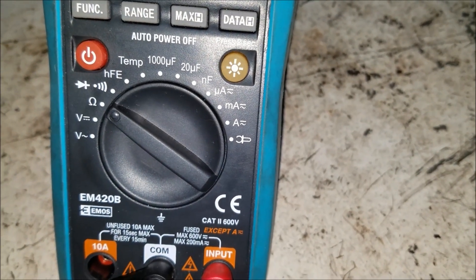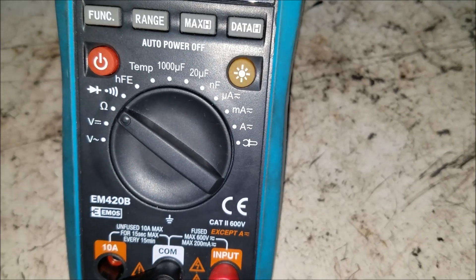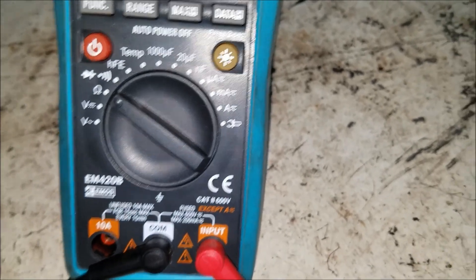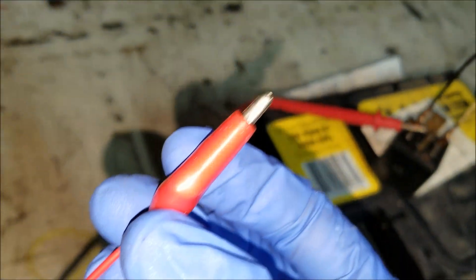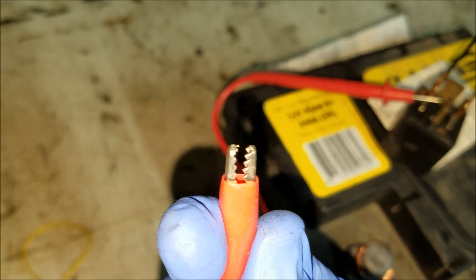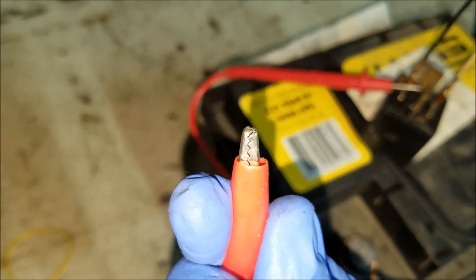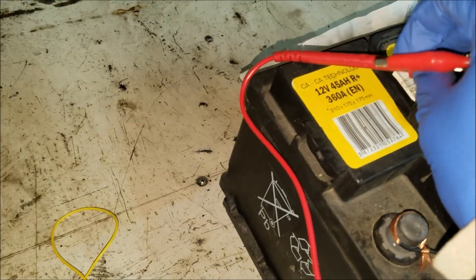I'm also going to be using these alligator clips since it's kind of hard to do it all by one hand. We're going to take one of our multimeter leads and we're going to connect it to number 30.